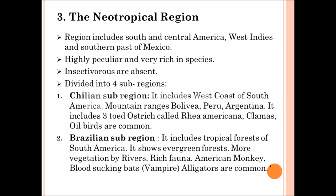The third region is the Neotropical region. It includes South America, West Indies, and the southern part of Mexico. Very peculiar and very rich species are found here. Insectivores are absent. This region is divided into four sub-regions. The first is the Chilean sub-region, which includes the west coast of South America and mountain ranges of Bolivia, Peru, and Argentina. It contains the three-toed ostrich, also called Rhea Americana. Oil birds are common in this area.